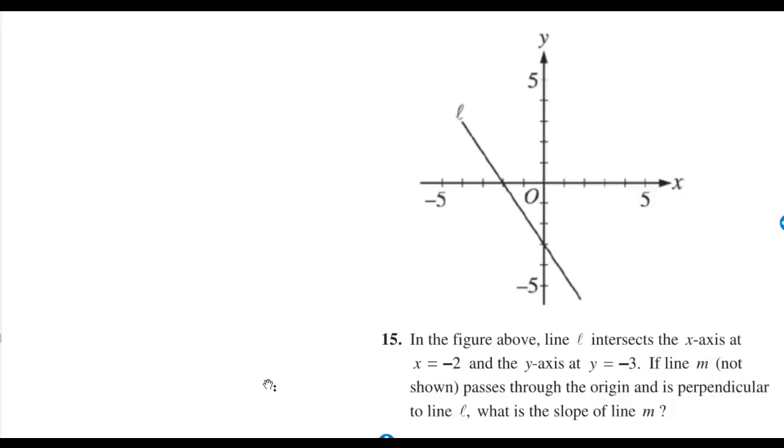In the figure above, line L intersects the x-axis at x equals negative 2 and the y-axis at y equals negative 3. If line M, not shown, passes through the origin and is perpendicular to line L, what is the slope of line M?